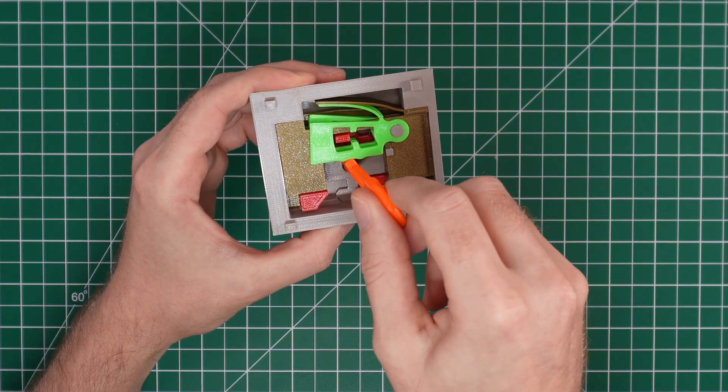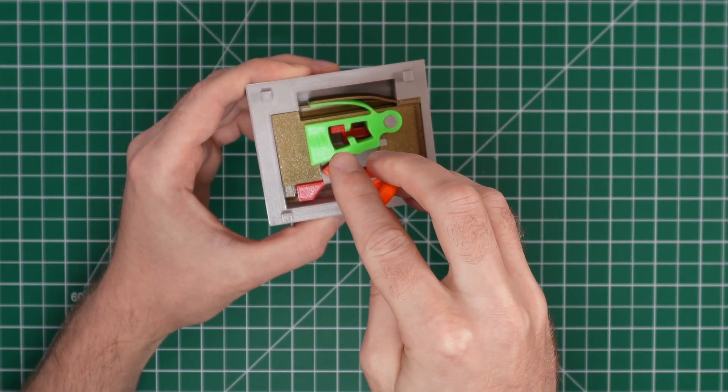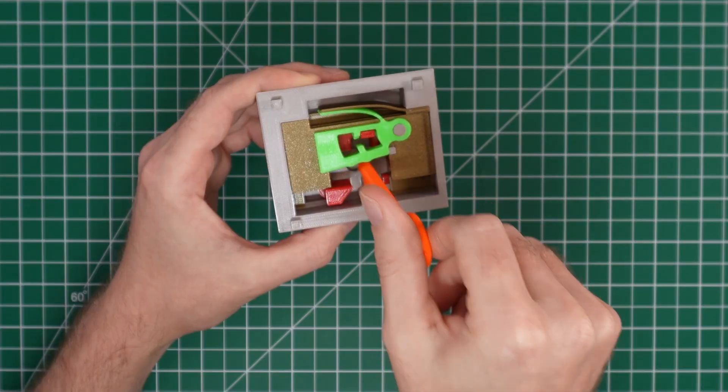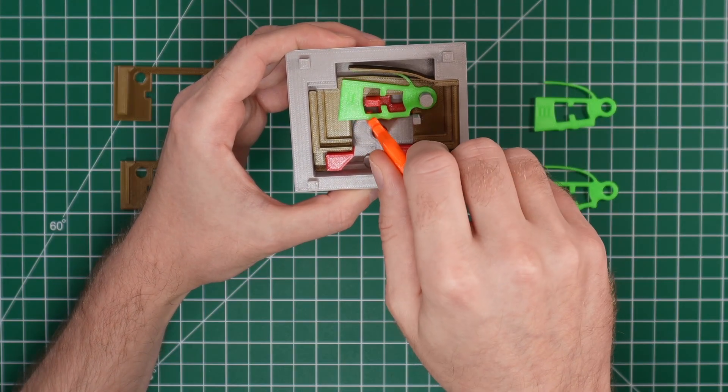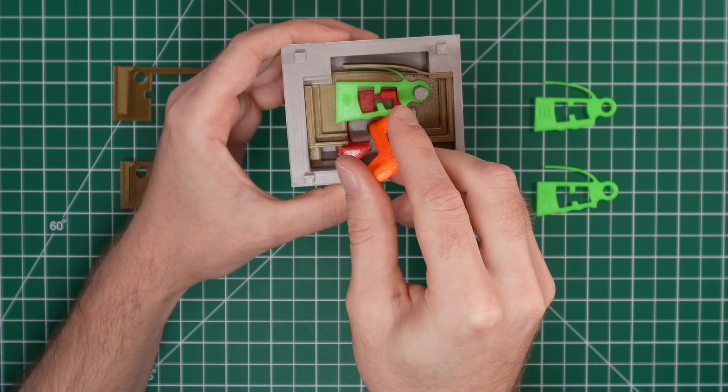I'll start the assembly by showing how the lock works. As I mentioned before, this is the lever tumbler lock. The green pieces are the levers, and each one has a cutout known as a gate. Each lever must be lifted to the correct height in order for the bolt, which is a red piece, to slide back and forth.